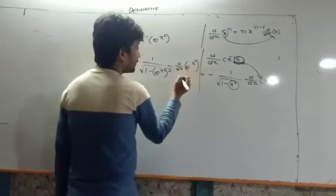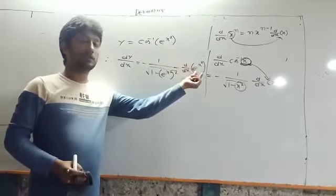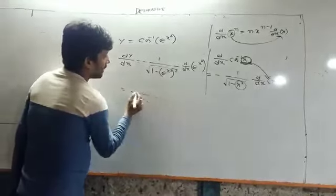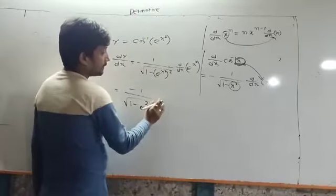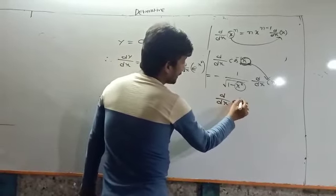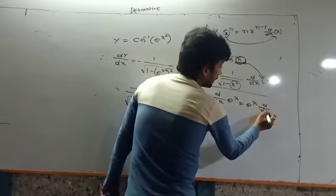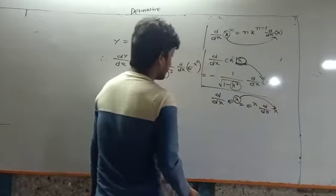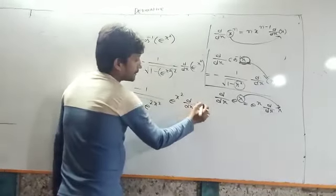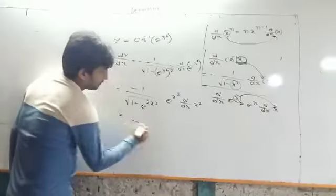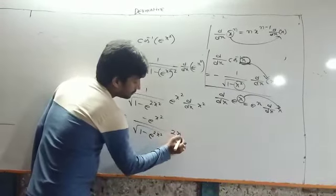e to the power x square — both of them. The derivative of cos inverse is minus 1 by root of 1 minus x square. So cos inverse gives us minus 1 by root of 1 minus e to the power 2x square, into e to the power x square. The result is minus e to the power x square by root over 1 minus e to the power 2x square, into 2x.